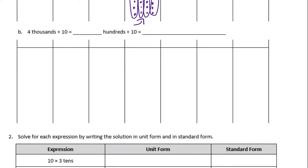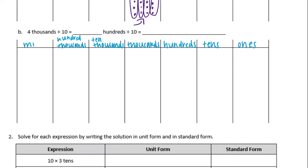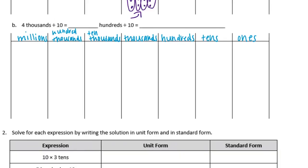So now we have four thousands divided by ten. I'm going to do the same thing and label my place values. We're dividing, so we're going to be moving to the right, making it smaller.